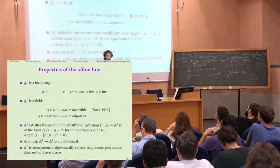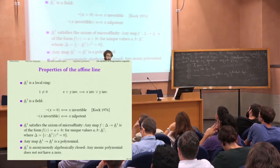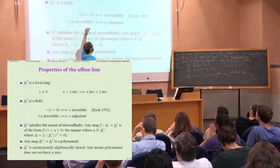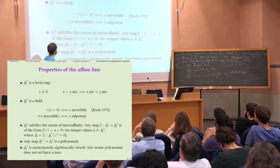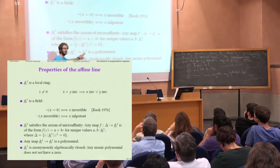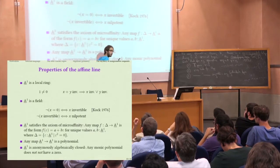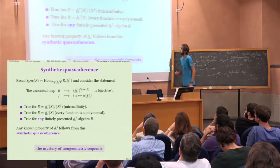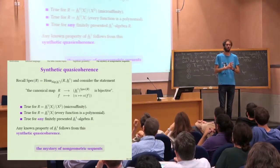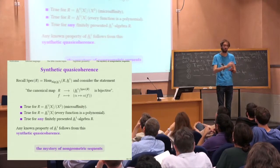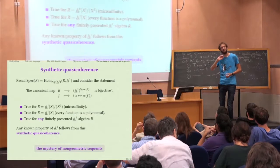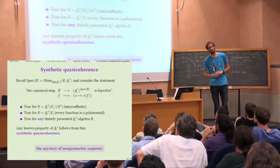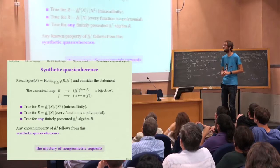If you want to work internally for the big Zariski topos it's useful to know several properties of the affine line A^1: for instance, it's a field in any of these senses. Or you have the interesting statement that any map from A^1 to A^1 is a polynomial. And now the embarrassing part starts.